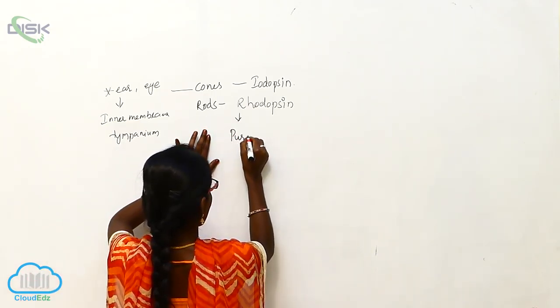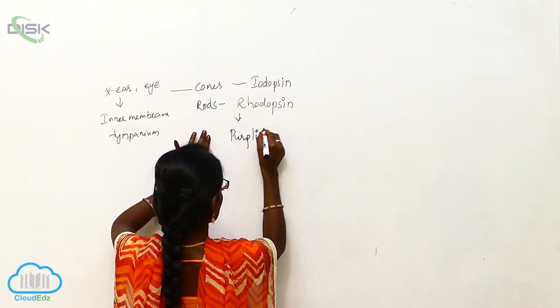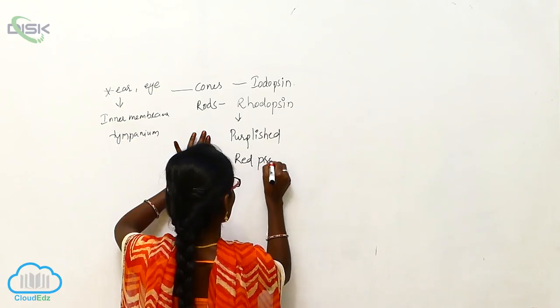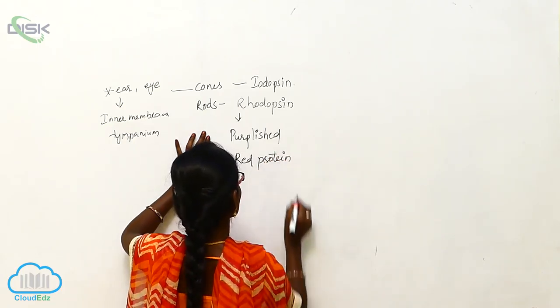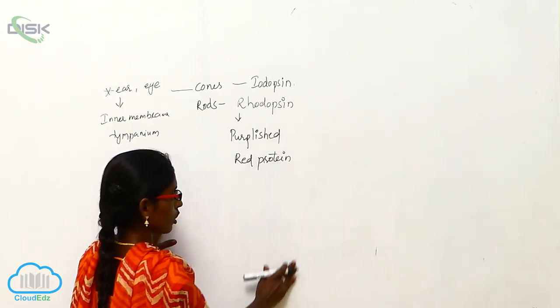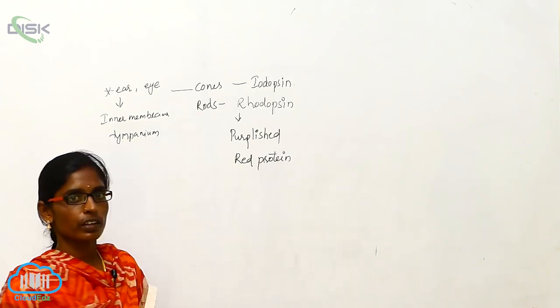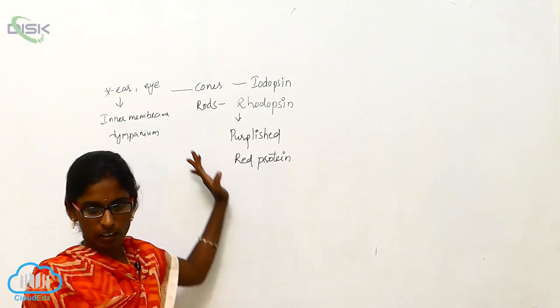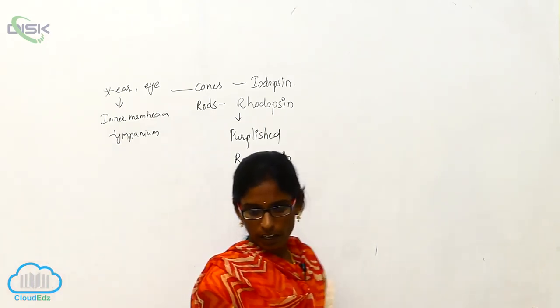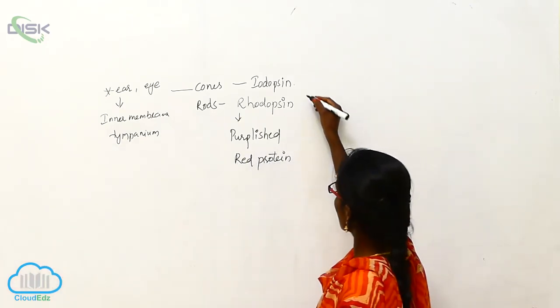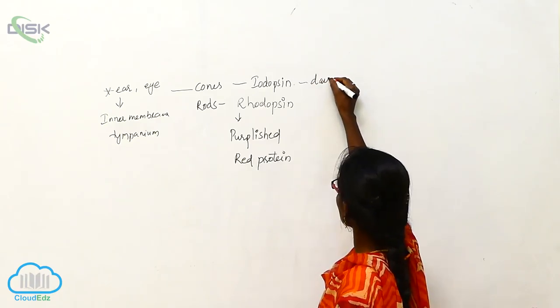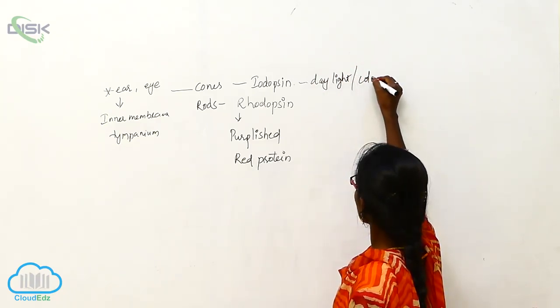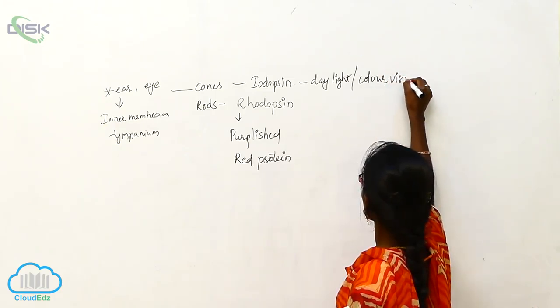These rods and cones are used for vision and eyesight regularly. The iodopsin is used for daylight or color vision.